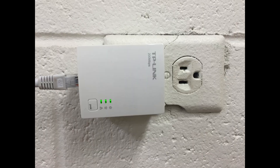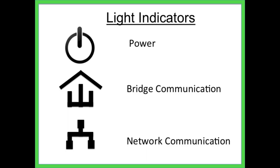If all three lights are on with some flashing steadily, you likely have a proper connection. The top light indicates power, the middle indicates bridge communication, and the bottom indicates network communication.